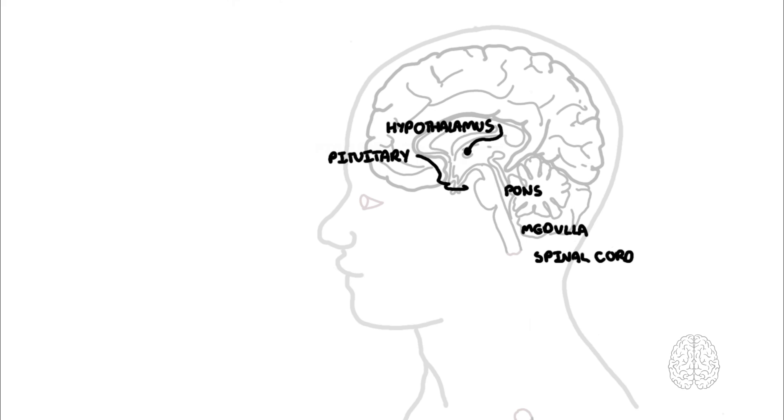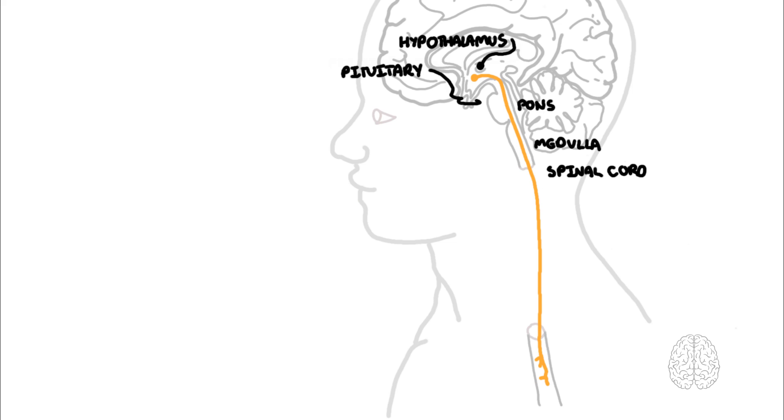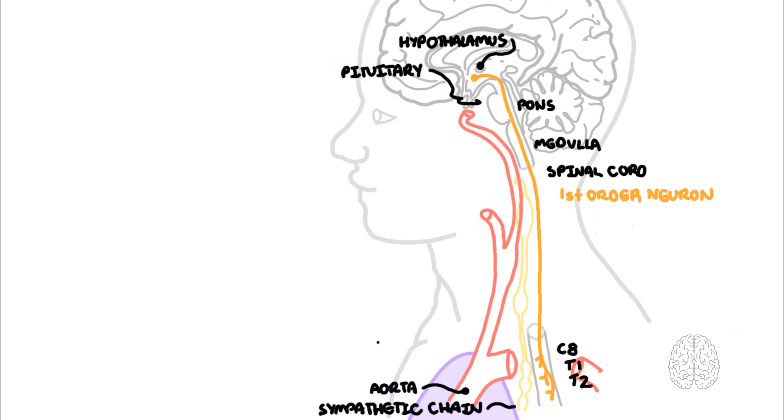The sympathetic pathway involved in Horner's includes three nerves, basically neurons. The first neuron arises from the hypothalamus. It descends down to the cervical spinal cord section, about level C8, T1, T2. This area is also called the ciliospinal center of budge and synapses with the second sympathetic neuron.